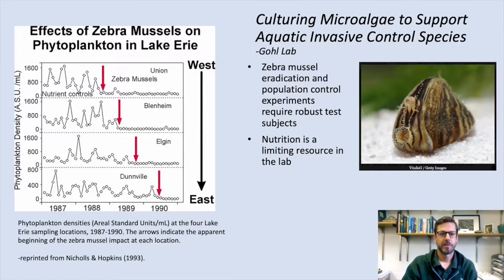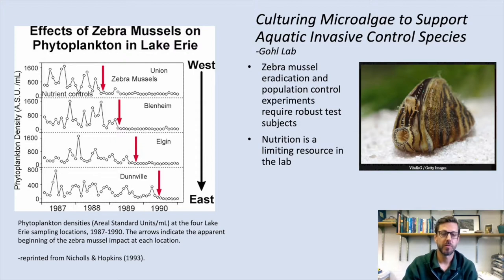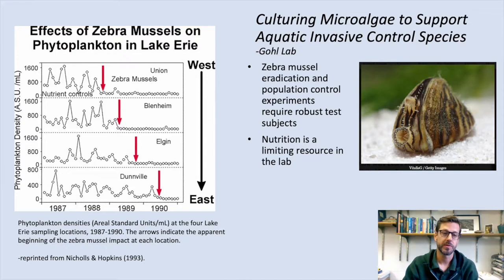I'm Ben Minerich with the Minnesota Zoo and MAISRC, reporting on our continuation sub-project titled 'Culturing Microalgae to Support Aquatic Invasive Control Species.' The Goal Lab and other MAISRC initiatives require robust zebra mussel test subjects to conduct experiments on rearing and population control methods. Zebra mussels in the wild have extraordinary influence on algae in the water column, as each mussel can filter a liter of water per day, with notable impact on water clarity and resulting higher lake temperatures.